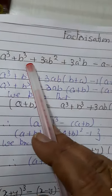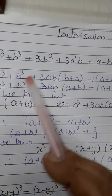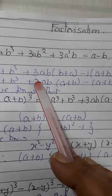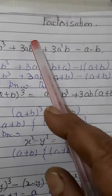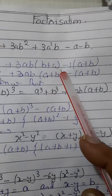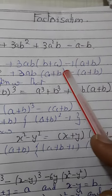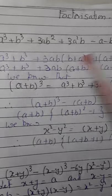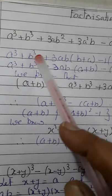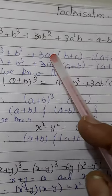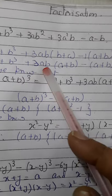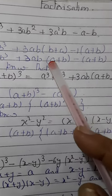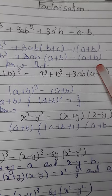Here a³ + b³ you can copy. Now here 3ab you can take common, so 3ab is common. Remaining is b + a. And here we can take minus one common, so in bracket you can write a + b. Now first we will copy these two terms, and in the third term 3ab, we will change the position of a and b, so we can write a + b. Then minus a + b.